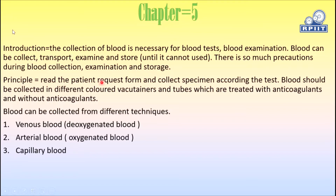Principle: First, read the patient request form and collect the specimen according to the required test. Blood will be collected in different colored vacuum containers and tubes, which are treated with anticoagulants or without anticoagulants, and selected according to the test.